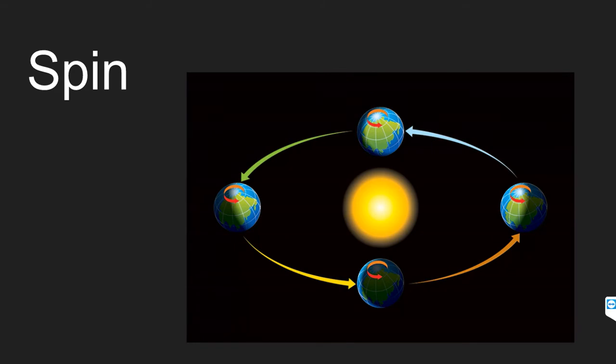When it's tilted away from the sun, the sun is shining more on the southern hemisphere, which brings summer to the southern hemisphere. And when it is pointing toward the sun, the Earth is tilting toward the sun a little more.